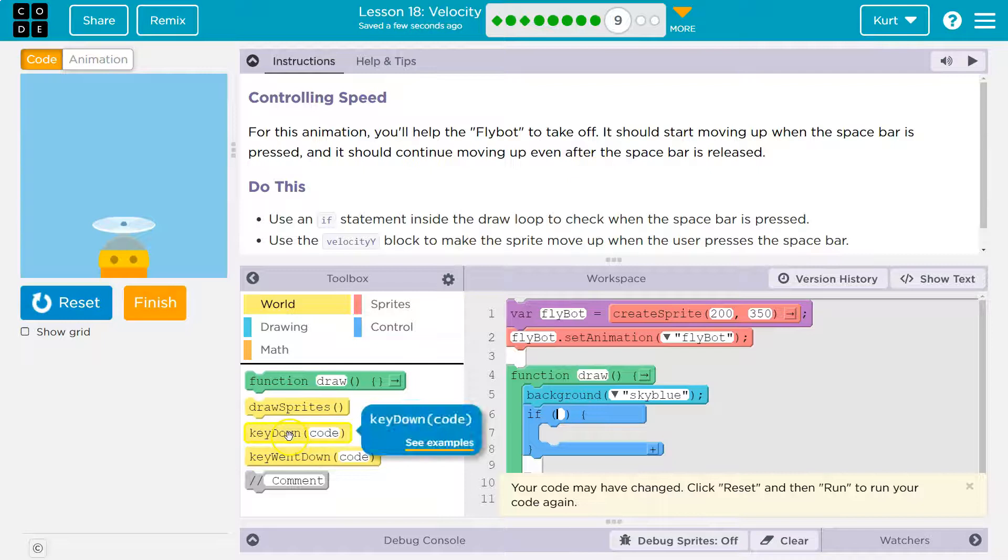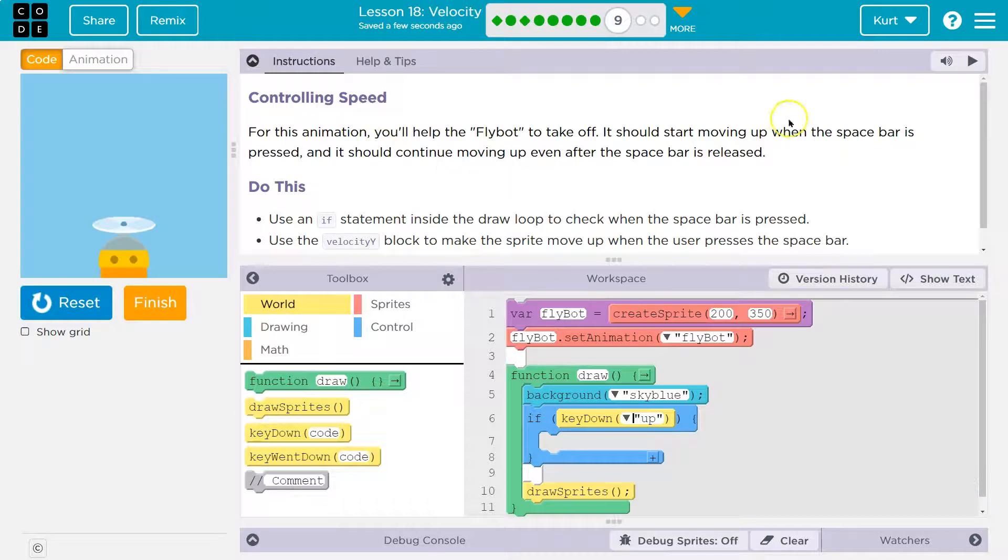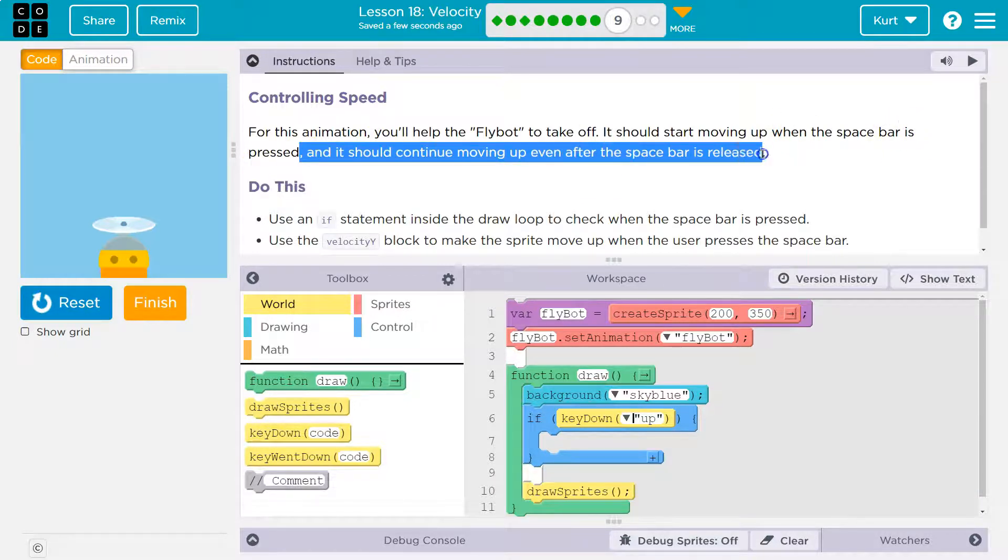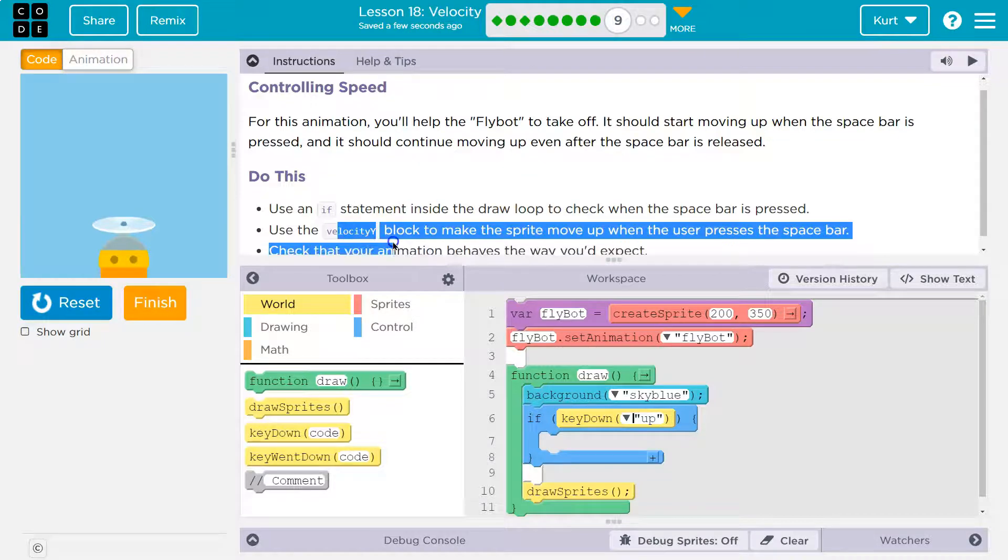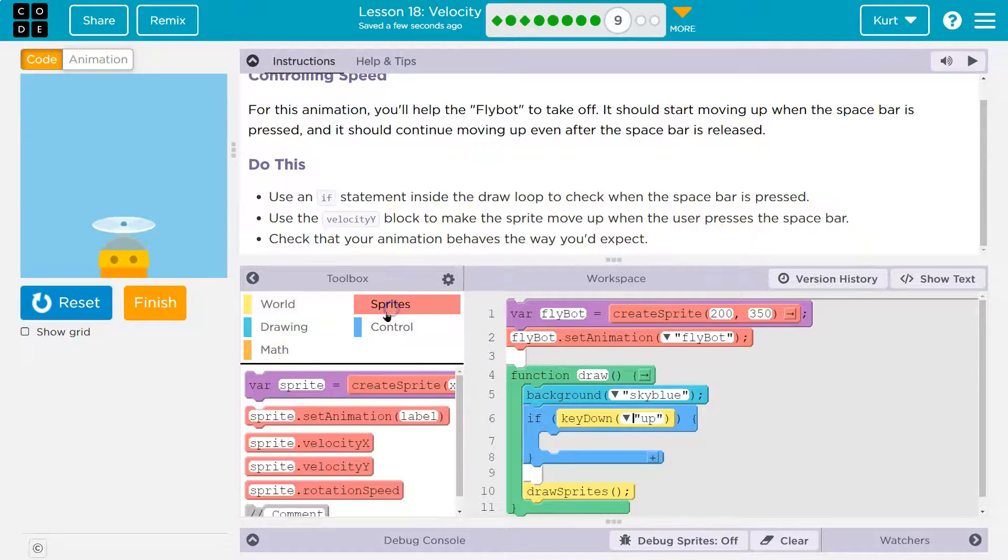Now, either one of these would work. I'll use key down, but key went down would work as well. The second we press the key, we're going to start moving up. So whether we hold down the key or release it, key went down or key down will provide us with constant upwards movement. It might be more efficient to use key went down just because of the instantaneous one check. But anyways, both these work.